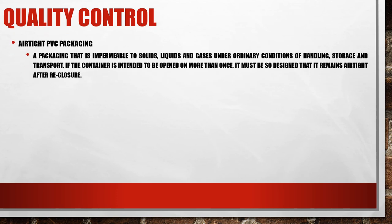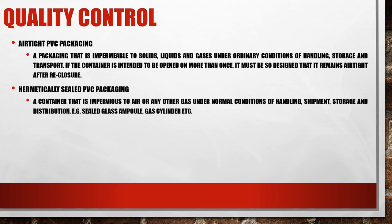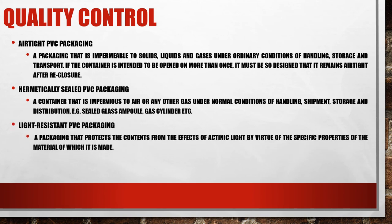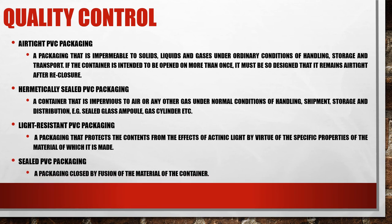Quality control for PVC packaging includes: Airtight PVC Packaging — a packaging that is impermeable to solids, liquids, and gases under ordinary conditions of handling, storage, and transport. If the container is intended to be opened more than once, it must be designed to remain airtight after re-closure. Hermetically Sealed PVC Packaging — a container impervious to air or any other gas under normal conditions of handling, shipment, storage, and distribution, for example sealed glass ampoules and gas cylinders. Light Resistant PVC Packaging — a packaging that protects contents from actinic light by virtue of the specific properties of its material. Sealed PVC Packaging — a packaging closed by fusion of the material of the container.